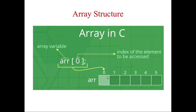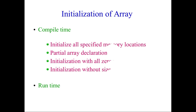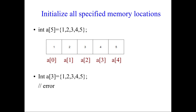Next is initialization of array. There are two types: one is compile time and another one is runtime. Under compile time there are four types: first is initialization with all specified memory locations, next is partial array declaration, next is initialization with all zeros, and then without size.